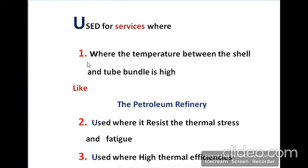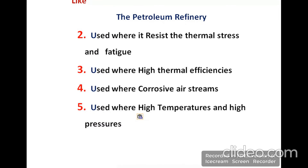For example, these types of heat exchangers are mostly used in petroleum refineries. According to the second point, these types of heat exchangers are used where they resist thermal stresses and fatigue. These are also used where high thermal efficiencies are required. And at the fourth point, these are used where we deal with severe streams and also where high temperature and high pressure applications exist.